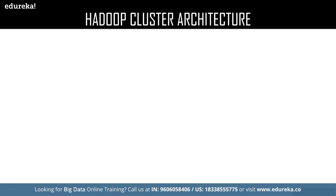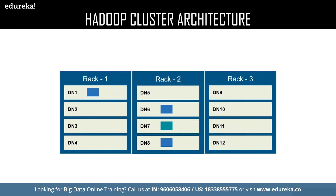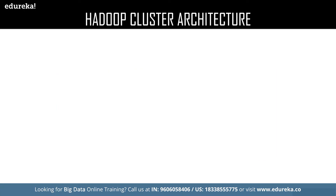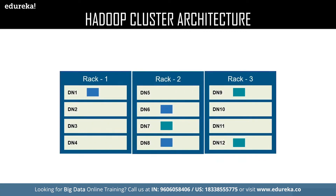Now let us look at a different block. There is a new block in rack number two, data node seven — this is the local rack for that data block. The replicas of data node seven are stored in the remote rack, which is rack number three, with the data block stored in data node nine and data node twelve.